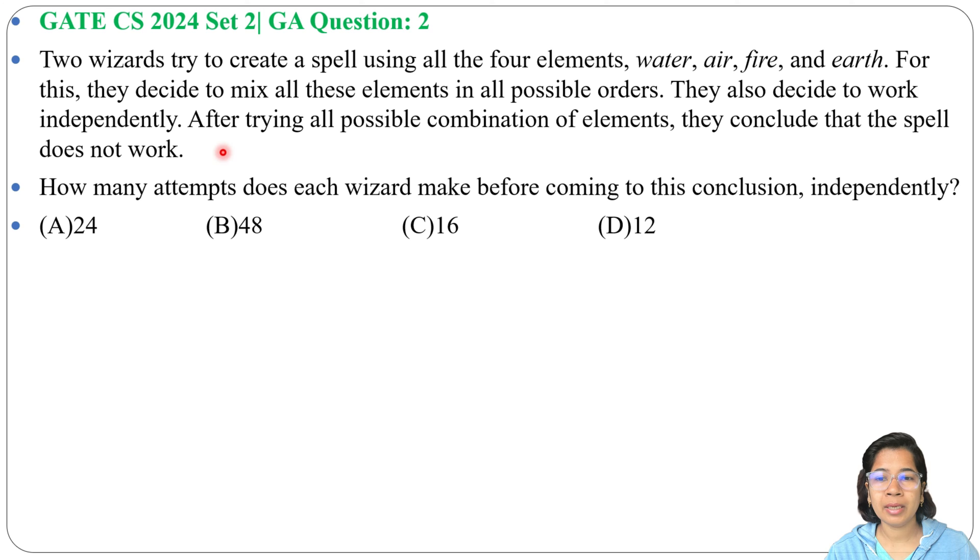For this, they decide to mix all these elements in all possible orders. They also decide to work independently. After trying all possible combinations of elements, they conclude that the spell doesn't work. How many attempts does each wizard make before coming to this conclusion independently? Four options are given. So here we have four elements.